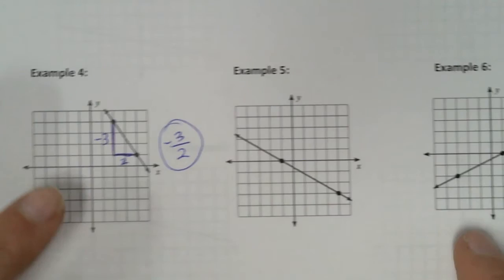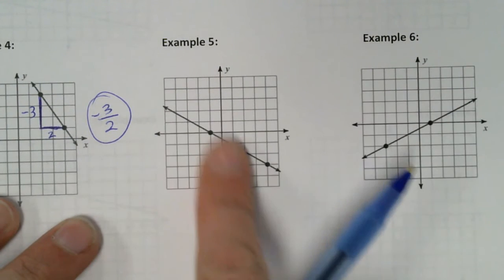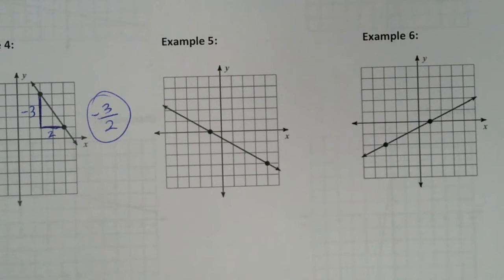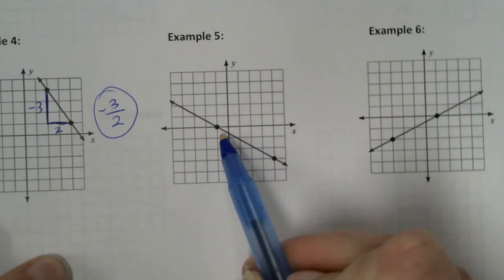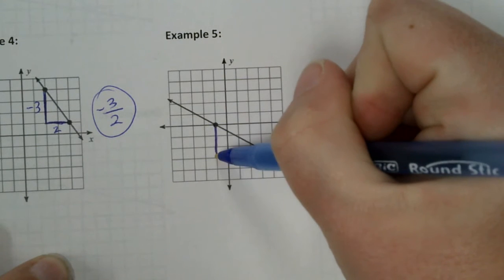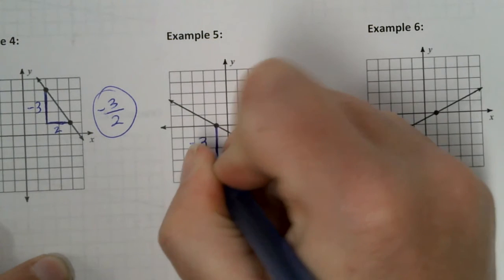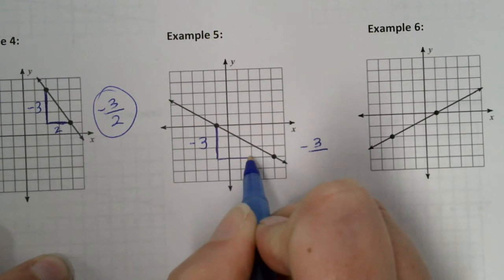I'm going to pause for a second. I want you guys to try example five and six — I gave you the points, you already have your points. So all you've got to do is start at the left and then count your rise and your run. For example five, we're going to start here — this is more to the left. We go down how far? Three again. So down three, that's my top number. And then I run one, two, three, four, five.